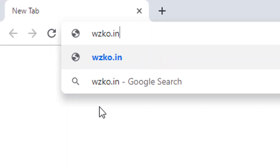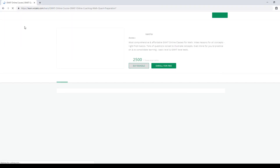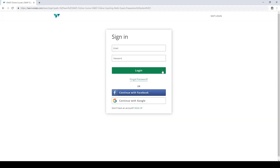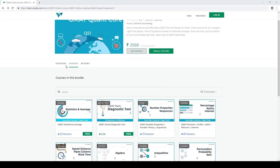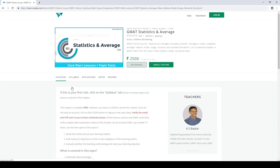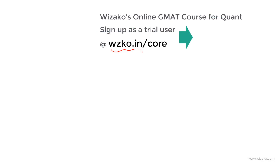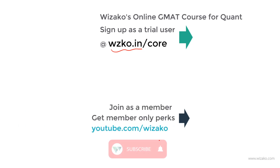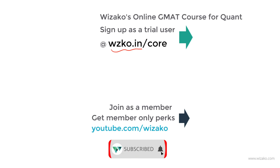Before you leave, two things: sign up as a trial user at wzko.in/core — one of the most comprehensive online GMAT courses. Get started with a free topic, statistics and averages, build momentum, then pay to unlock remaining topics. Also subscribe to the YouTube channel at youtube.com/bizaco and spread the word. You may also join the channel as a member for a small monthly fee to enjoy member-only perks that will help boost your GMAT preparation.